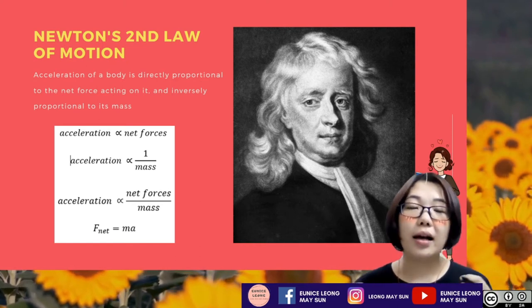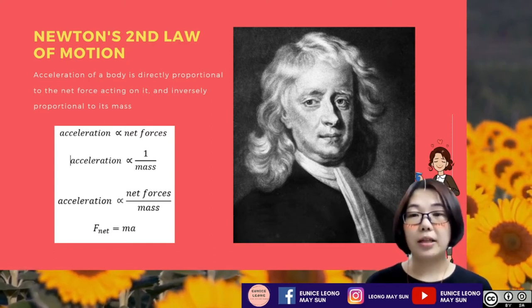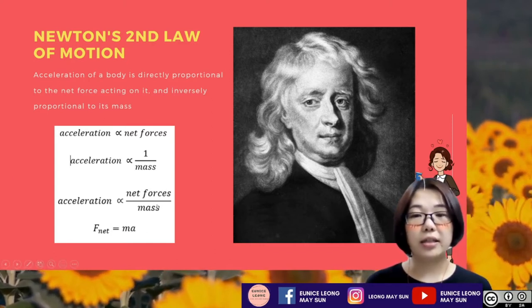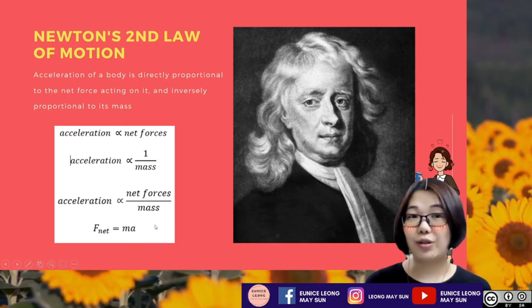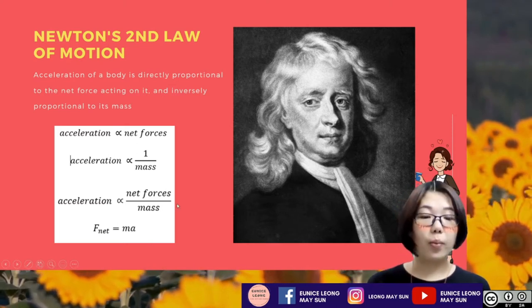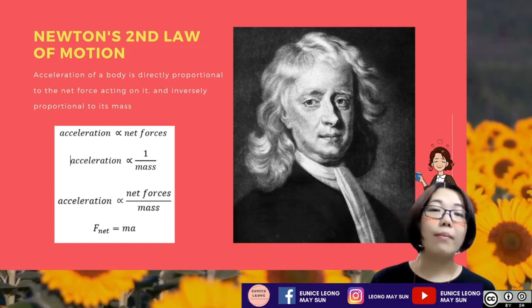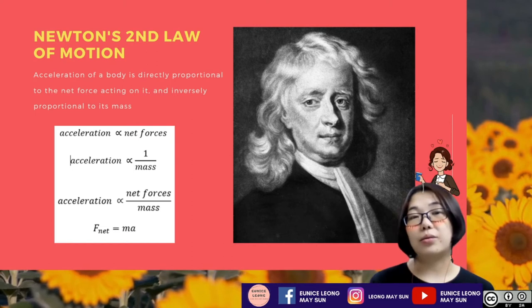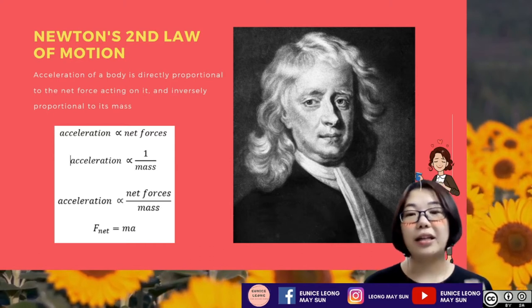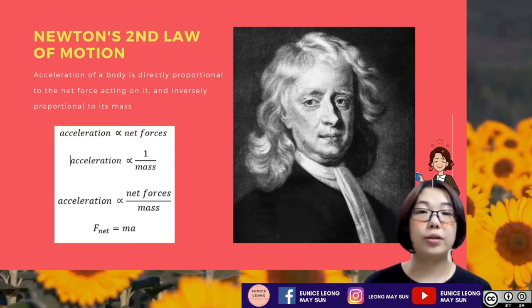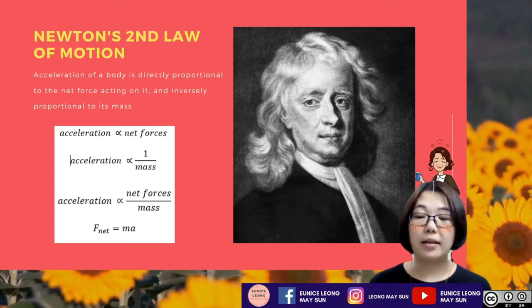The acceleration is also inversely proportionate to the mass of the object. So acceleration is directly proportionate to the net force divided by the mass. The normal equation is F_net equals MA. It is not what students always memorize as F equals MA. The actual Newton's second law of motion is the net force equals MA — the sum of the forces acting on the object equals the mass times its acceleration.